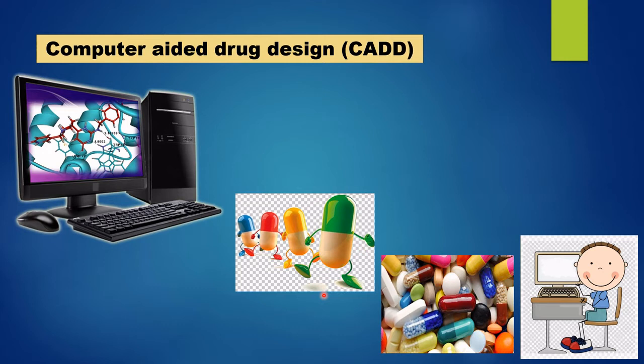It takes a lot of research and time to make this possible. There are a number of successful examples — a number of drugs available in the market which have been designed on the computer and rigorously tested. For example, the HIV protease inhibitors are the best example of computer-aided drug design molecules, and similarly there are many drugs available for diseases like cancer and HIV.